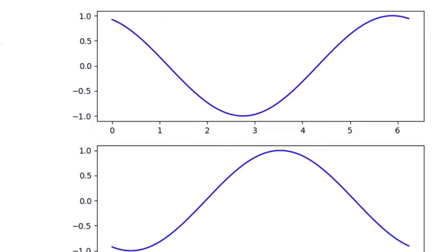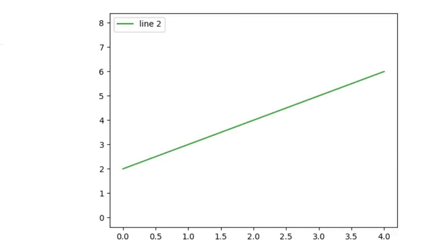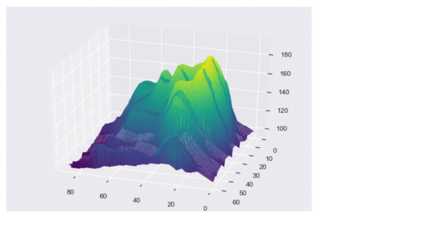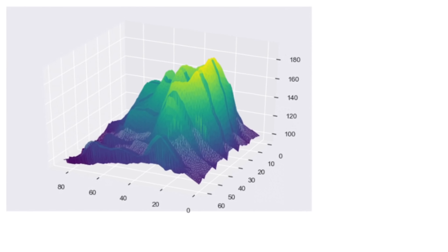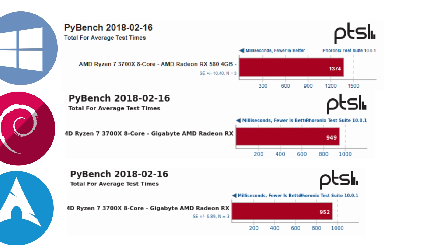Next was Pybench, a Python utility that reports average time results for its tests — lower is better. Debian came in first at 949 milliseconds, closely followed by Arch at 952 milliseconds, and Windows fell behind at 1374 milliseconds.